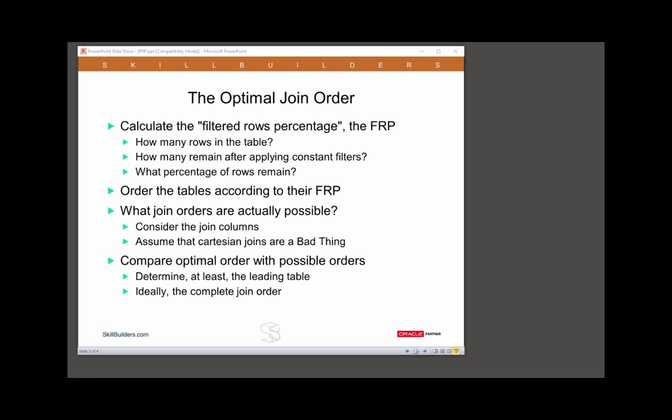Often you cannot actually follow the ideal filtered row percentage order because you need to consider what join orders are actually possible — the join columns between the tables, the foreign keys, the primary keys. Of course it is possible to join tables without a key relationship using a Cartesian join, but generally you can assume that's not going to be an optimal result.